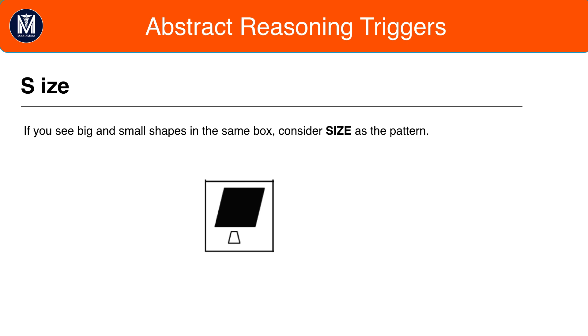However they won't make it easy for you. In the majority of boxes the big and small shapes might be very similar in size therefore it would be very difficult to spot this pattern from those boxes. However in at least one box there should normally be a huge difference in size between the big shape and the small shape.